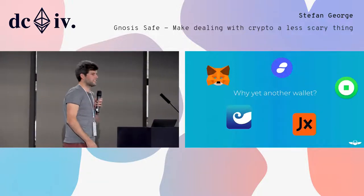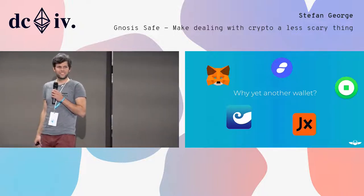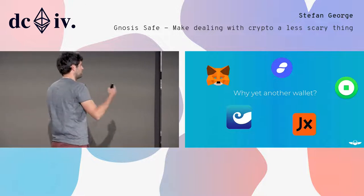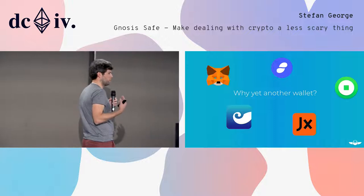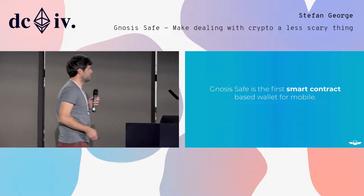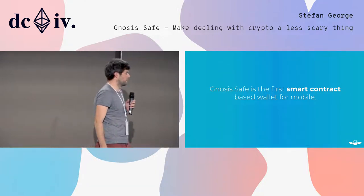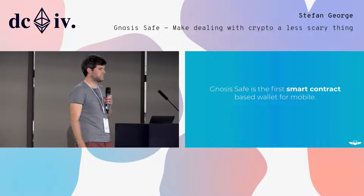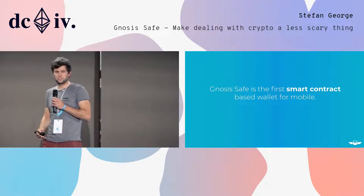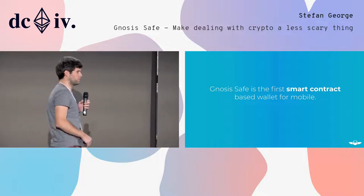The first question to ask is: why are we actually building yet another wallet? There are already so many wallets out there, and many of you probably have several of them. So why do we put so much effort into this? The reason is that we are significantly different from all of them, because we are the first smart contract-based wallet for mobile. We try to make smart contract-based wallets accessible for everyone as the default way to interact on the Ethereum network.